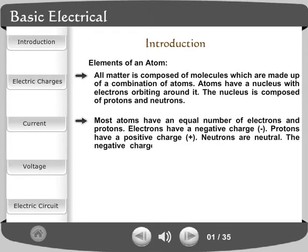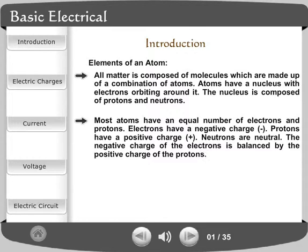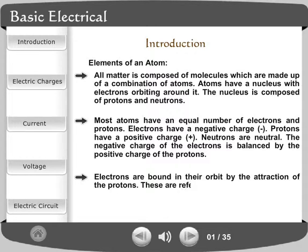The negative charge of the electrons is balanced by the positive charge of the protons. Electrons are bound in their orbit by the attraction of the protons. These are referred to as bound electrons.